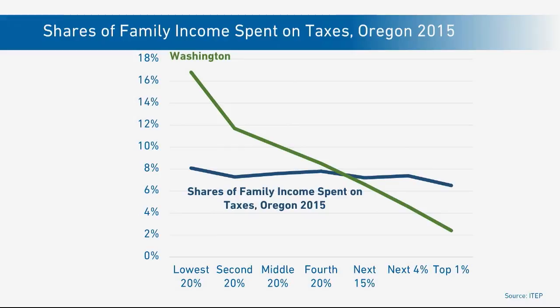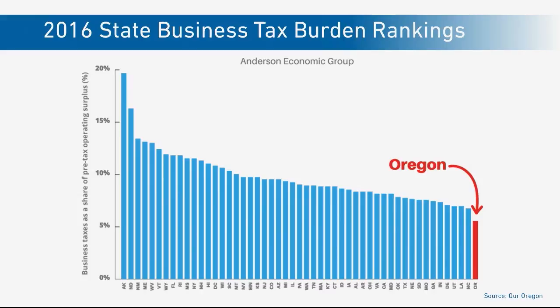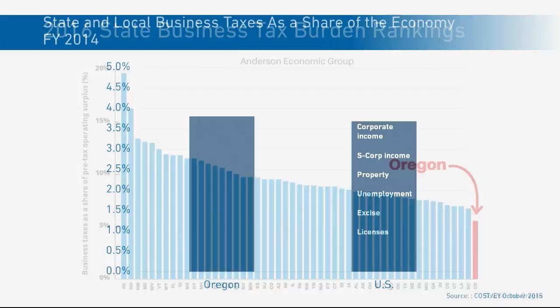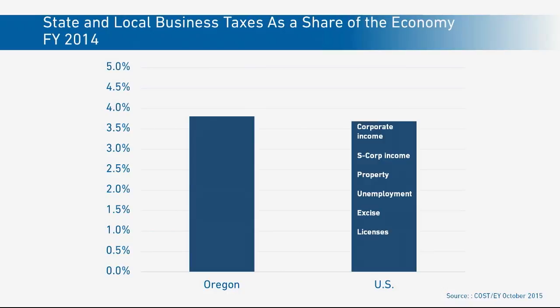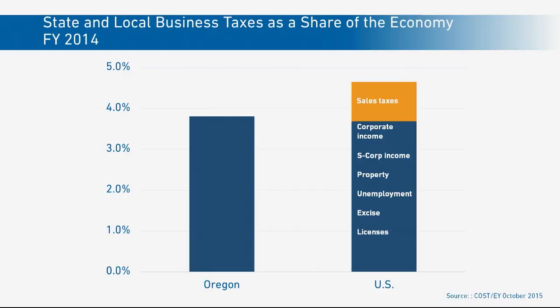We're going to finish now with two slides. The first one is Measure 97 and Oregon's business taxation at the tail end of that distribution. We are very similar to other states with respect to many forms of business taxation — corporate income taxes, property taxes, unemployment insurance, excise, license taxes, and the like. Where the difference comes in is in sales taxes. When businesses buy equipment or materials to do the work that they do, they don't have to pay sales taxes. So that's the big difference.